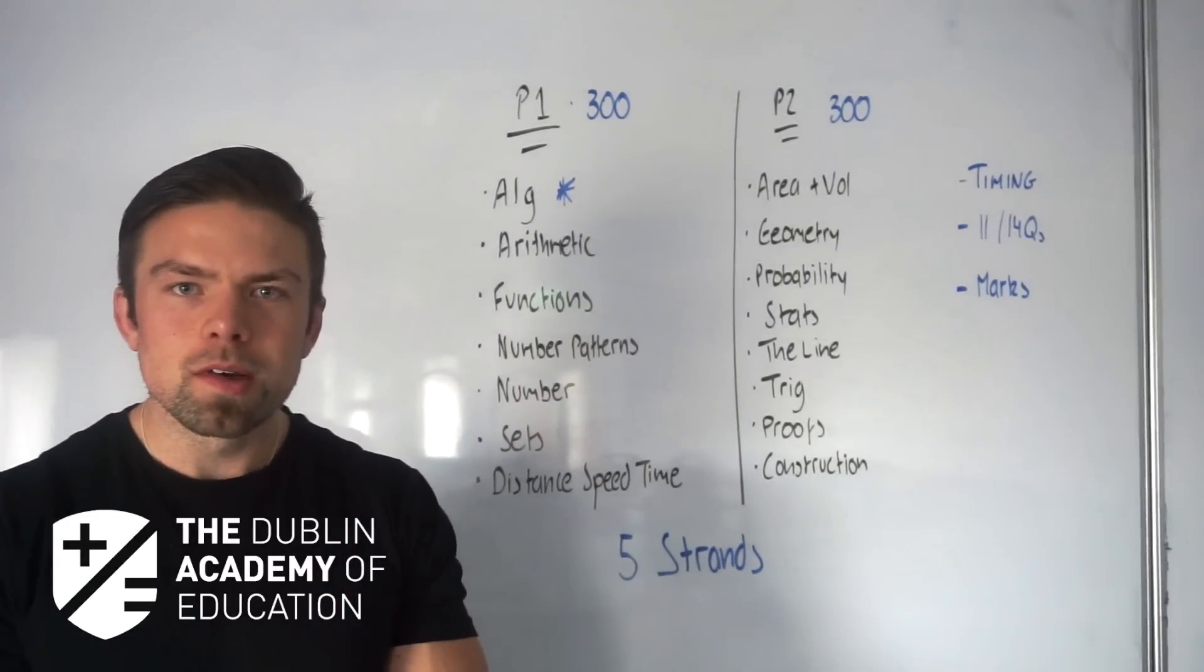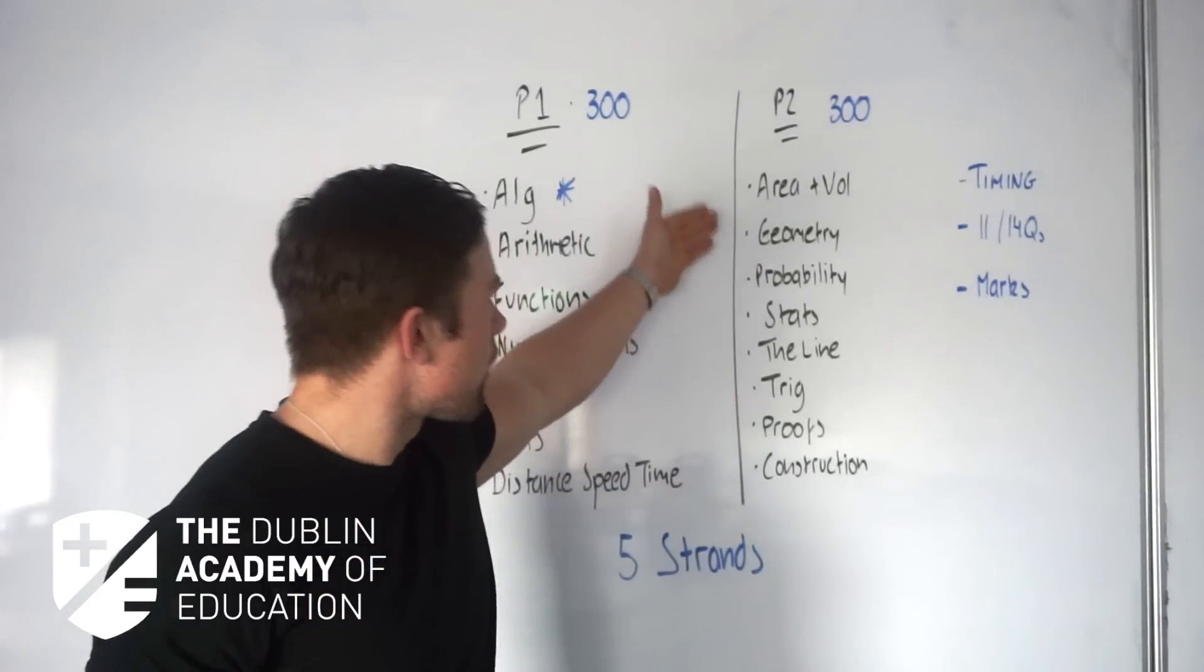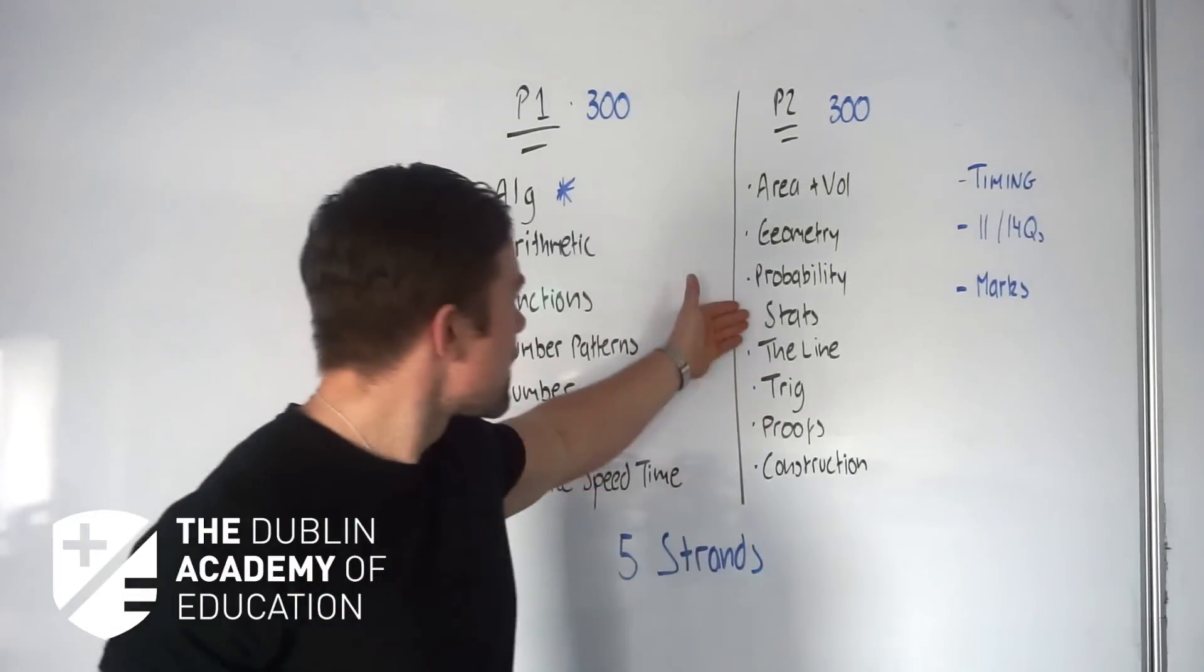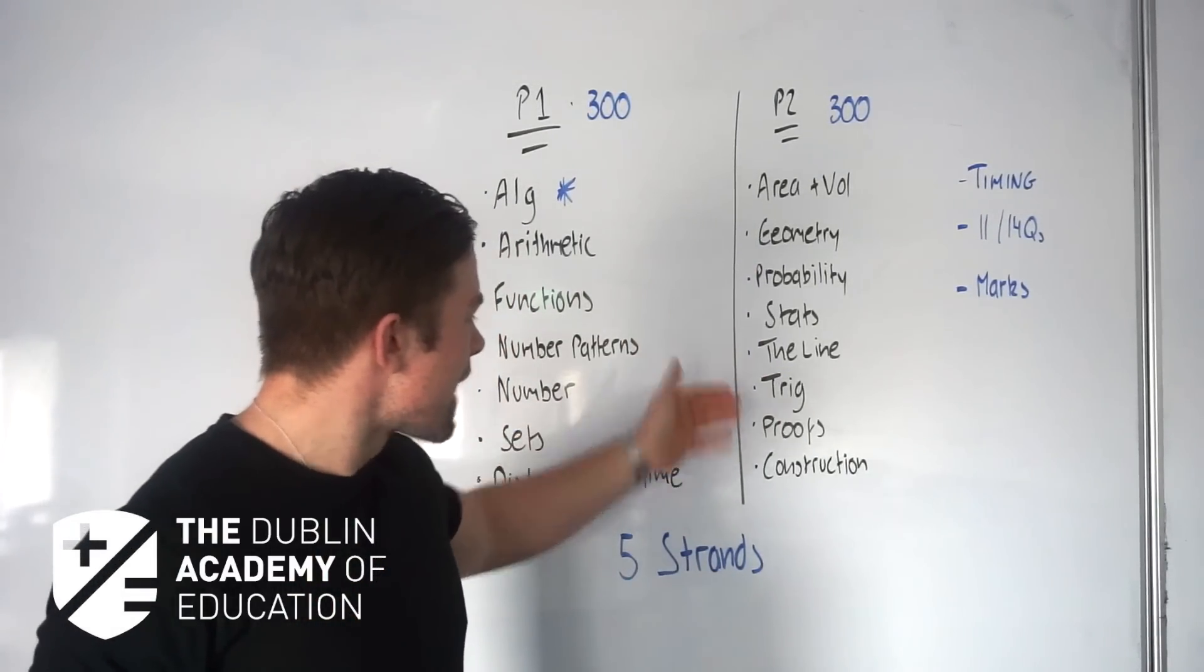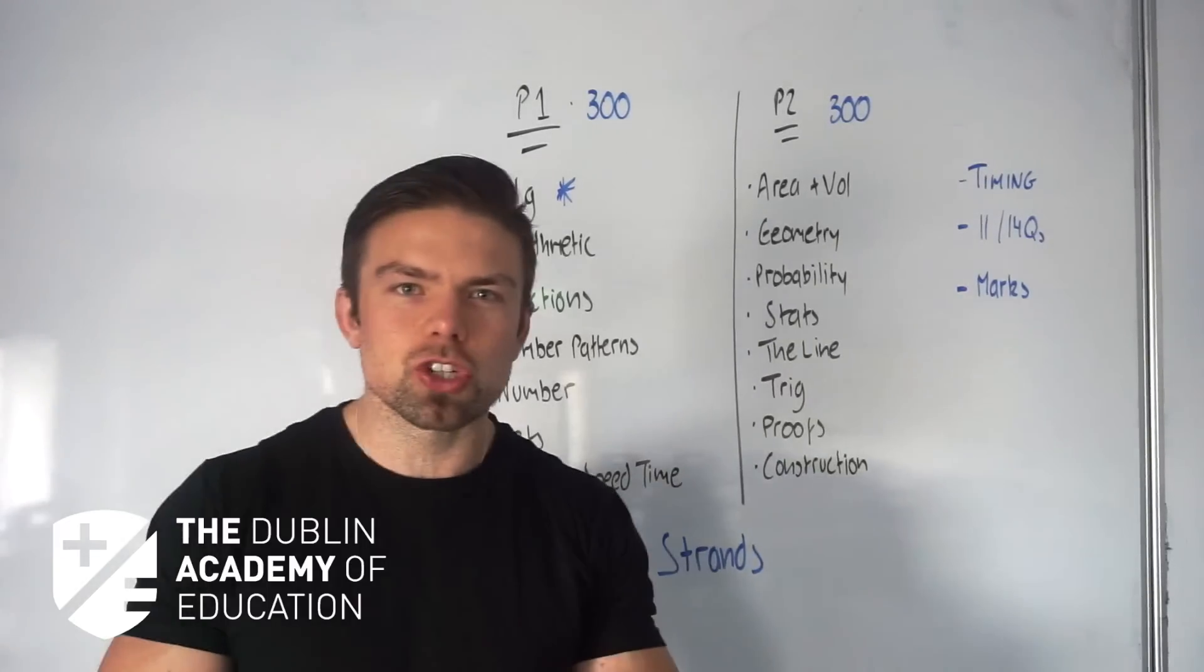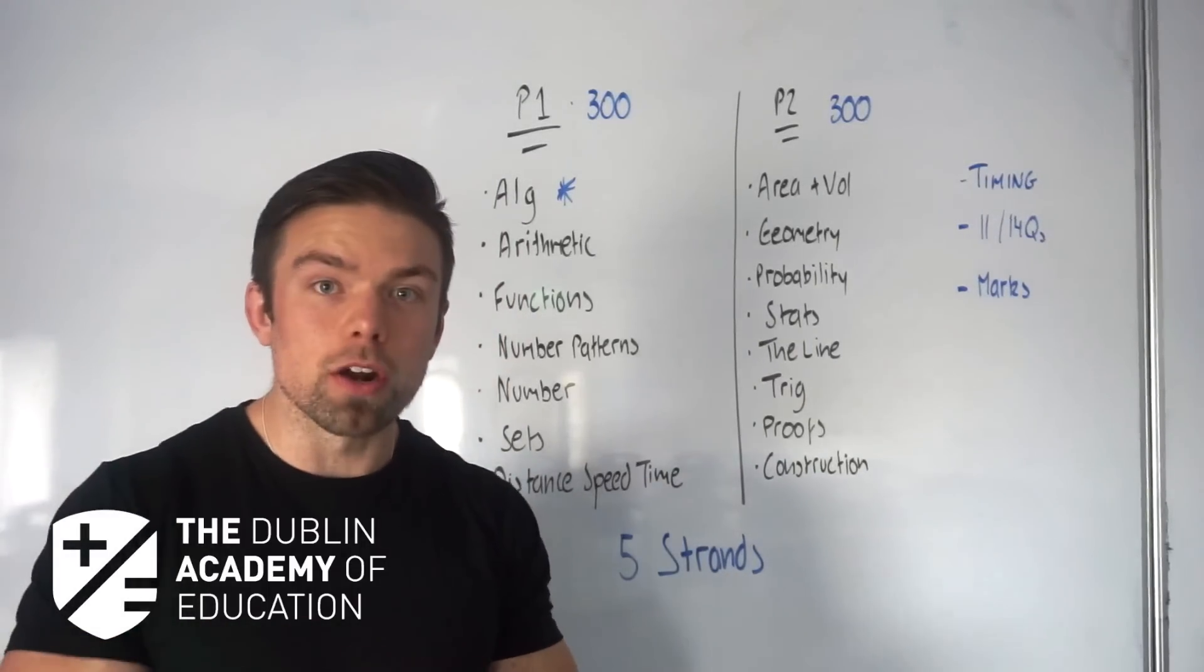And within them they all have a couple of little ideas that we need to know. On paper two we're talking about area, volume, geometry, probability, stats, the line, trigonometry, and then you've got your proofs and constructions that a serious student I would suggest should learn off by heart.